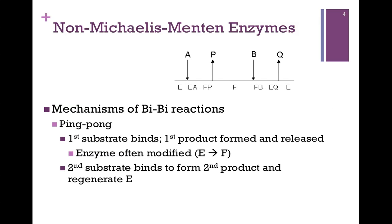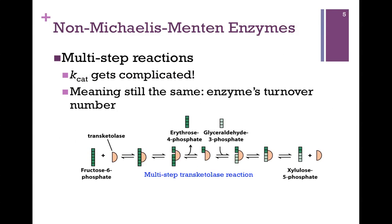The distinction here is that we can bind a substrate and carry out catalysis before we bind that second substrate. Another example of an enzyme that would not obey Michaelis-Menten kinetics is one where the catalysis involves multiple steps. Recall one of our assumptions was that the catalytic rate constant was equal to K2 and was irreversible — just one step. But in examples like the transketolase reaction, there are multiple steps. So Kcat is not simply one rate constant but a collection of rate constants, and it can get pretty complicated. The meaning of Kcat is still the same — it's still the enzyme's turnover number, that is, the number of substrate molecules that get converted to product per enzyme molecule — but it doesn't follow our simple model.